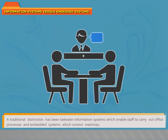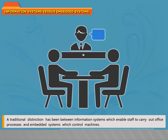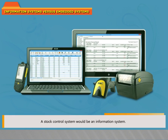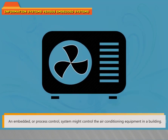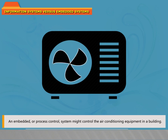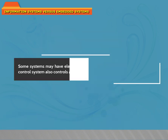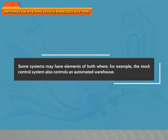A traditional distinction is between information systems, which enable staff to carry out office processes, and embedded systems, which control machines. A stock control system would be an information system; an embedded or process control system might control the air conditioning equipment in a building. Some systems may have elements of both — for example, a stock control system that also controls an automated warehouse.